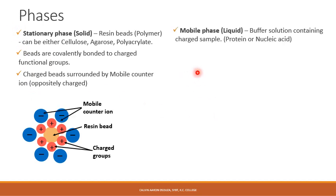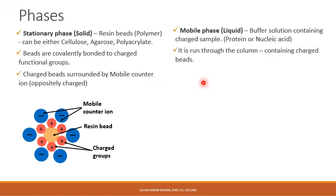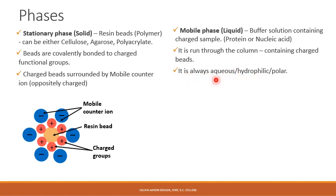The mobile phase is liquid in nature and usually contains a buffer solution. This buffer solution may contain the charged sample — either a protein or nucleic acid — and it is set at a particular required pH. This mobile phase is allowed to pass through the column containing the charged beads, and on the basis of affinity to the charged beads the ion exchange can take place. It is necessary that the mobile phase or buffer used is aqueous or polar in nature, which is one disadvantage — or advantage — of the technique, as it only allows separation of aqueous or polar samples.